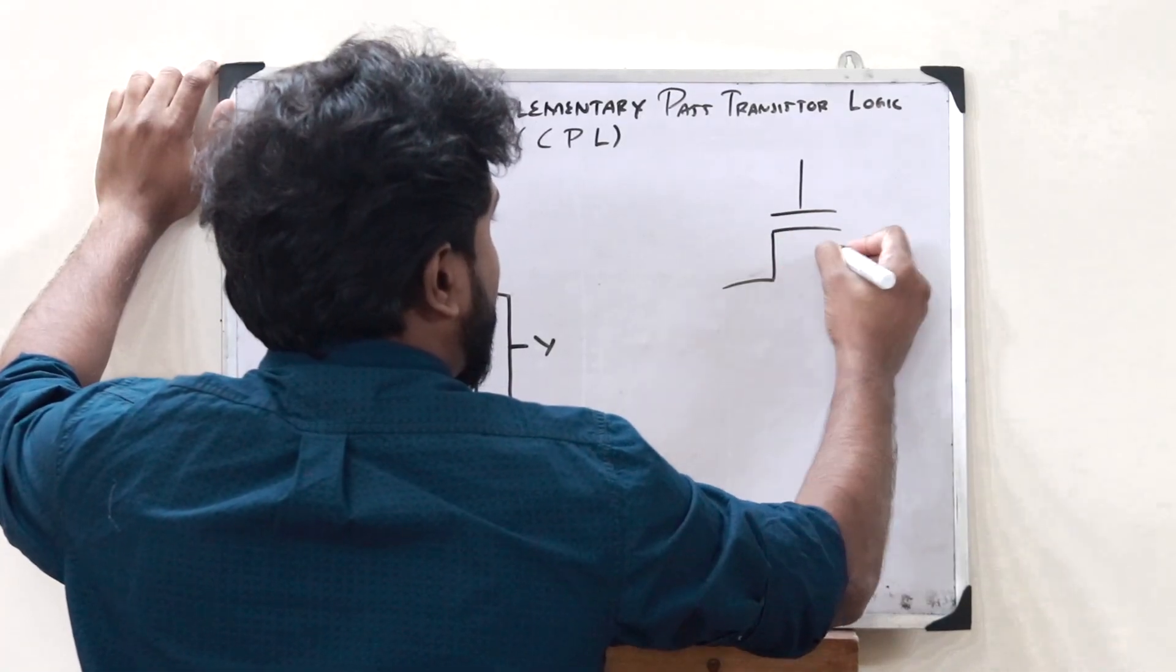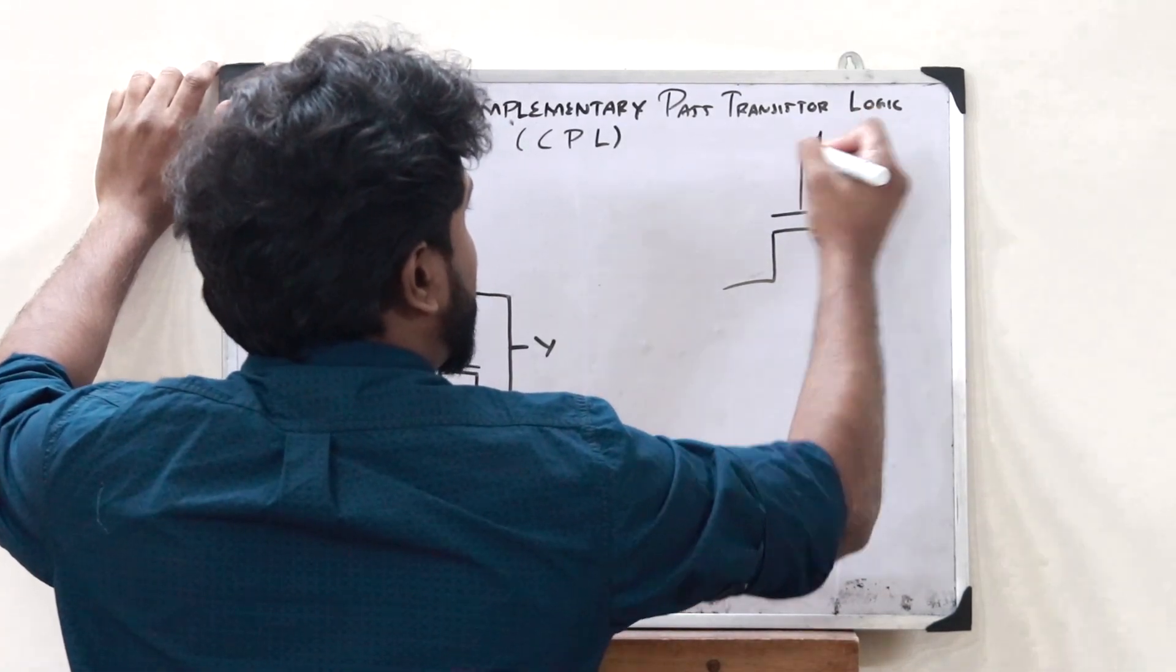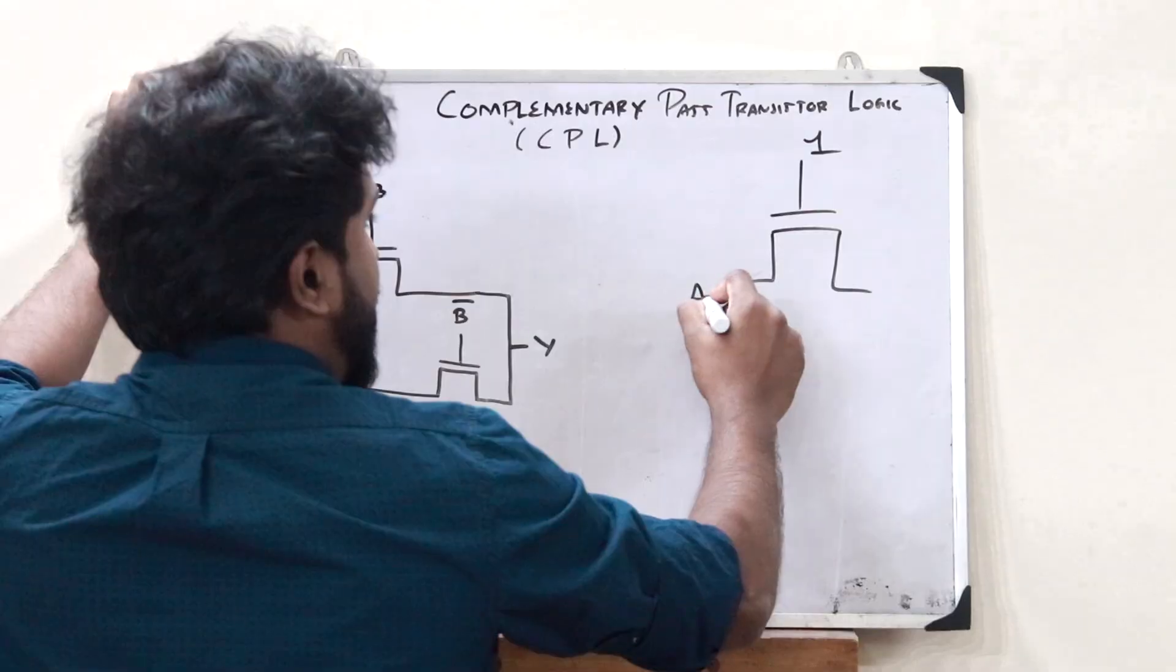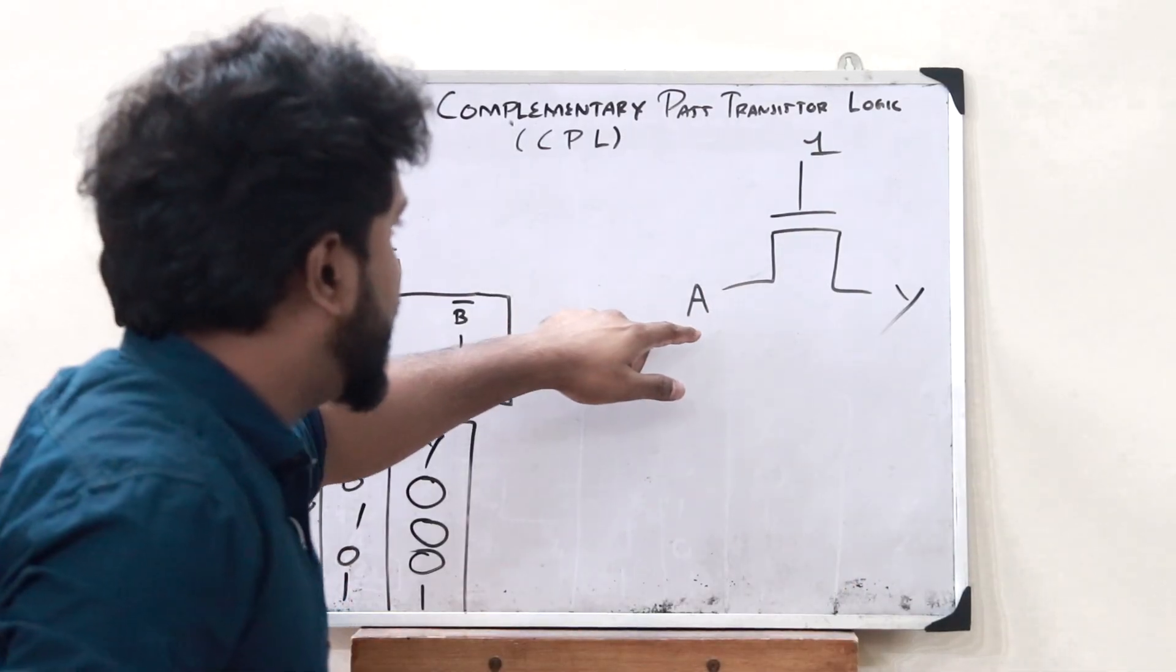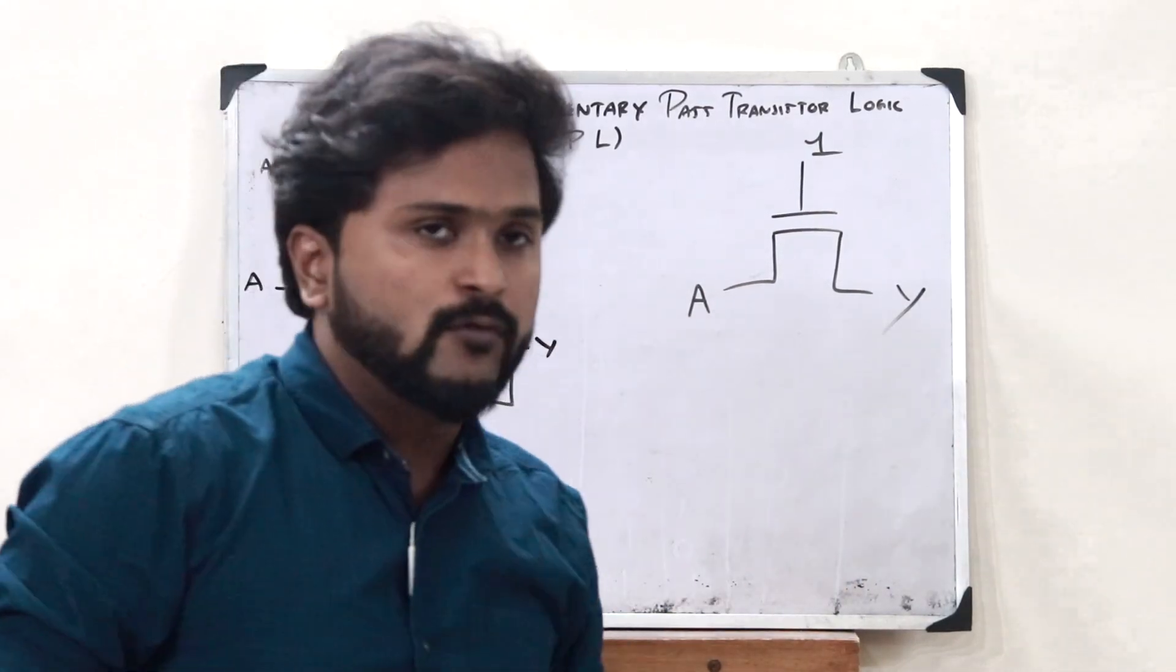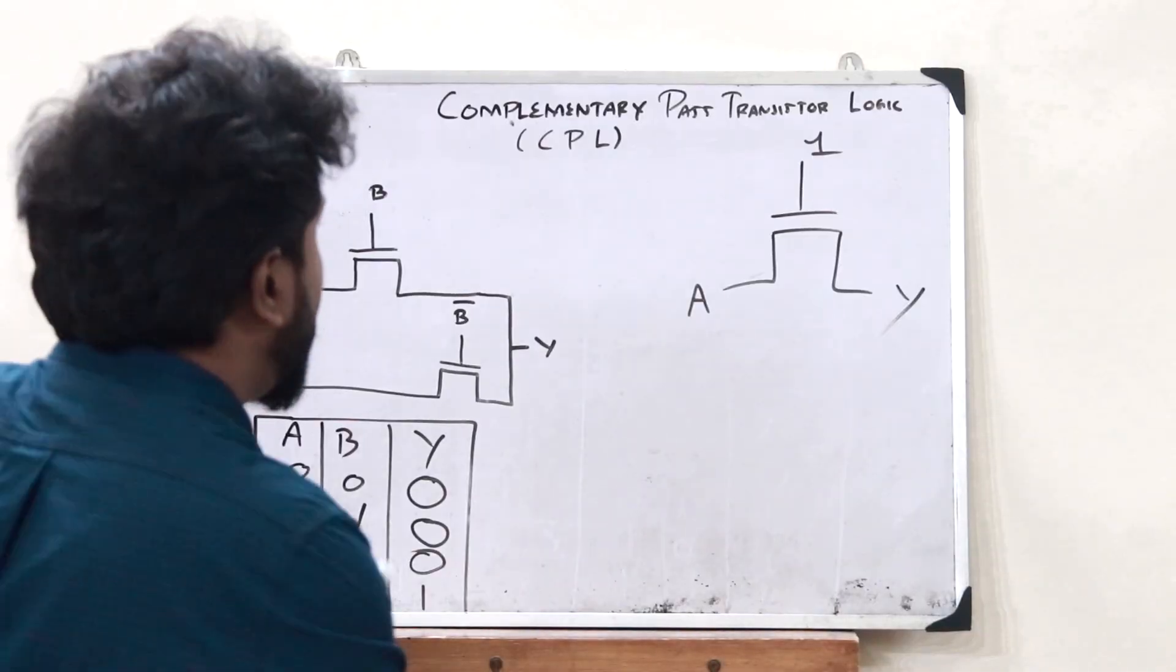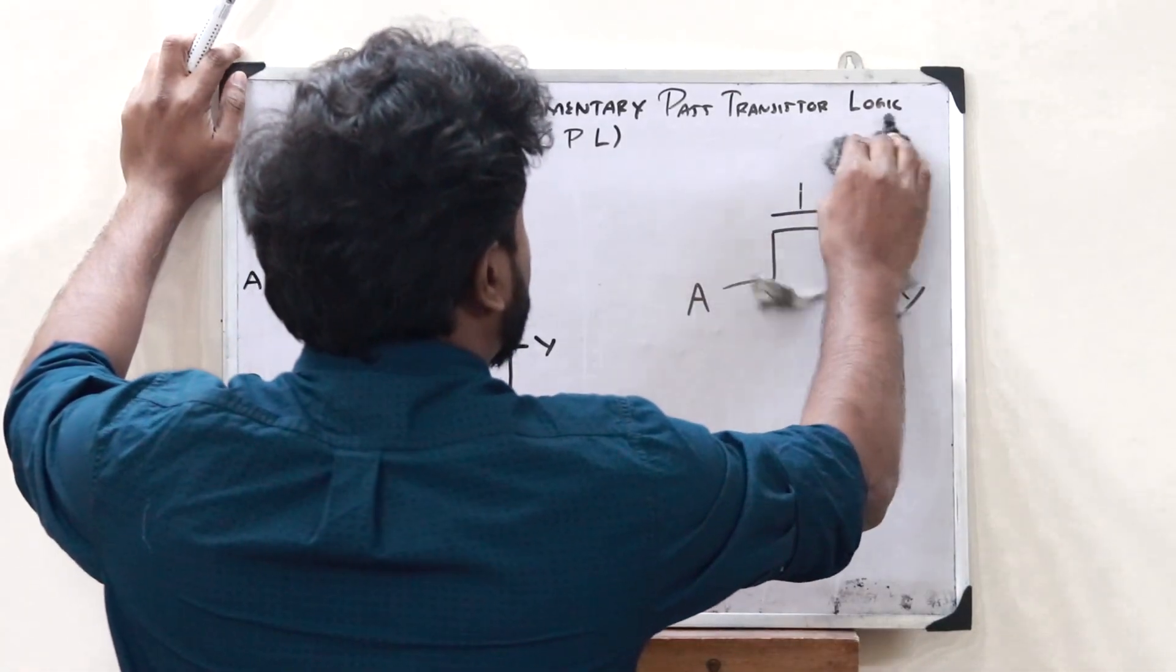That is, if this is an NMOS transistor, then if this input is 1, then whatever input we give at A, we would get the same value at the output Y over here. So, this was what you referred to as a pass transistor logic.